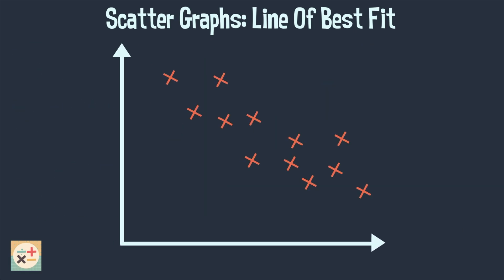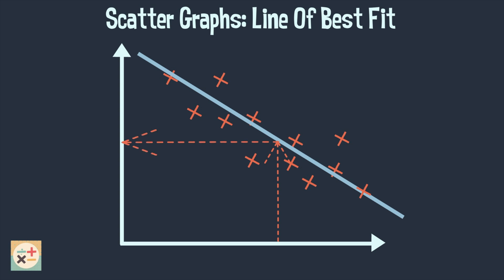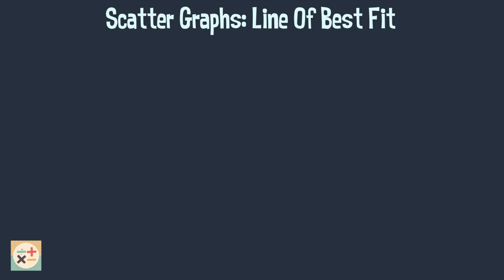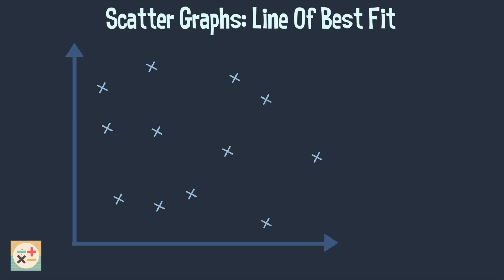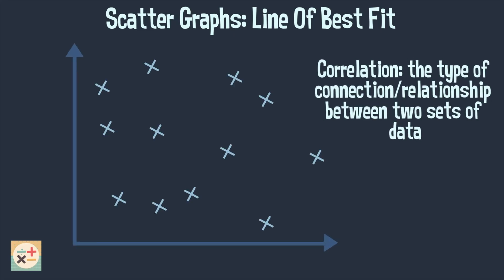Let's have a look at another scatter diagram and draw a line of best fit. We can now use the line of best fit to estimate values based on the data. But if the scatter plot shows no correlation, we are unable to draw a line of best fit.